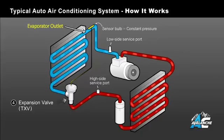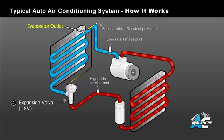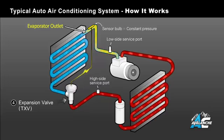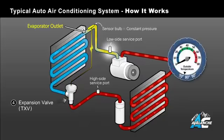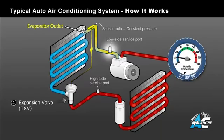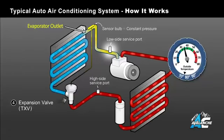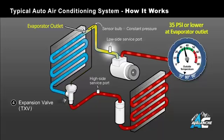Because the evaporator's outlet temperature is used to regulate the TXV valve, it sets a maximum operating pressure at the evaporator outlet. It then flows through the low side service port, where in many cases it is being measured by a low side gauge only to charge the system. As refrigerant is added, the pressure on the low side rises until it reaches its maximum operating pressure, which is typically 35 psi or lower.